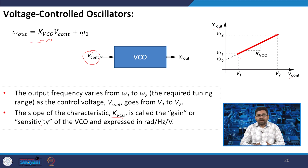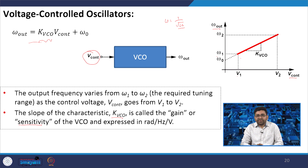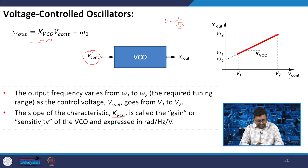If we want to add voltage control to change the oscillation frequency, we need to change one of the parameters. Since omega = 1/√(LC), which parameter can we change easily? The inductor is fixed — we cannot change it electronically — but we can change the capacitor, and this capacitor variation will allow us to change the oscillation frequency.